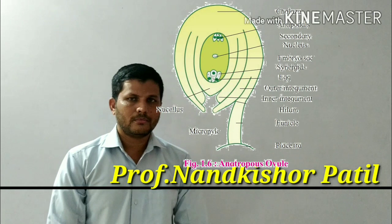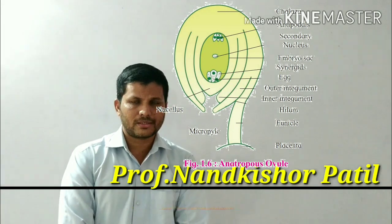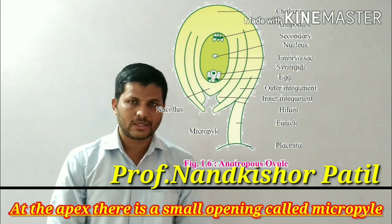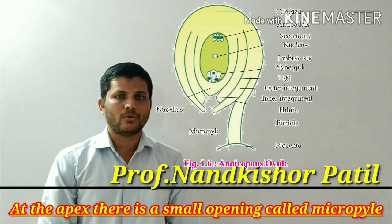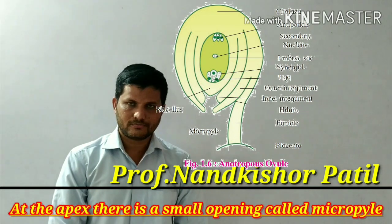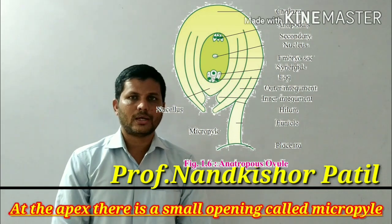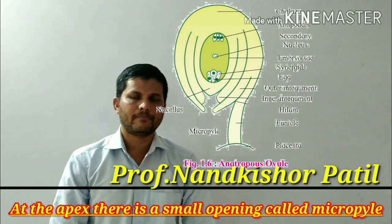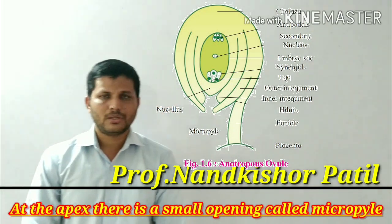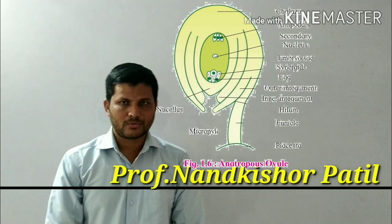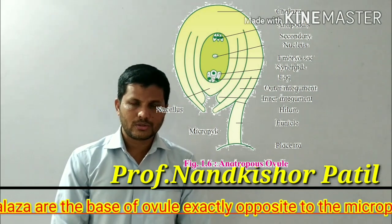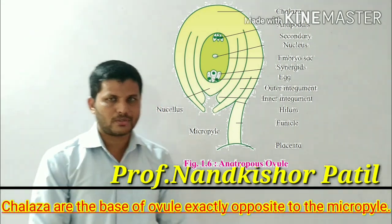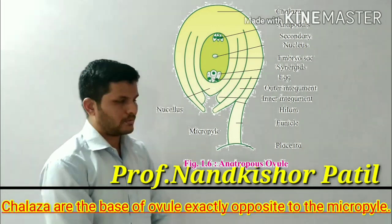At the apex, there is a small or narrow opening. That opening is called as the micropyle. And the chalaza is at the base of the ovule, which is directly opposite to the micropyle, as can be seen in the figure.